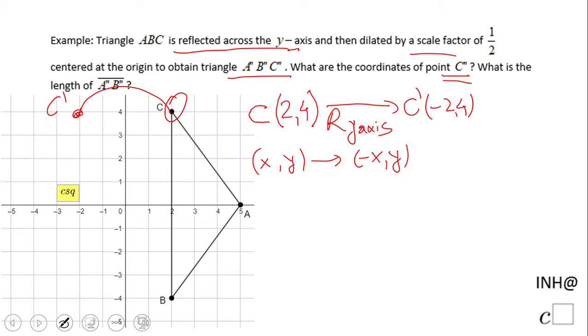And then I have to do the dilation. So C', which is (-2,4), we dilate it by a scale factor of one half. Now, the center of dilation is the origin. C'' should be (-1,2) because we multiply by one half the x and the y coordinate.